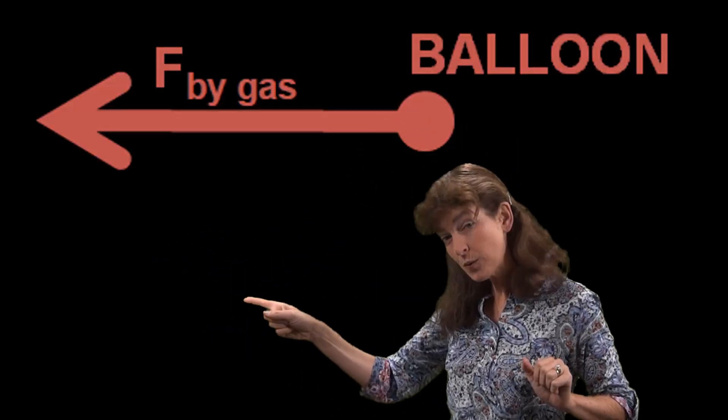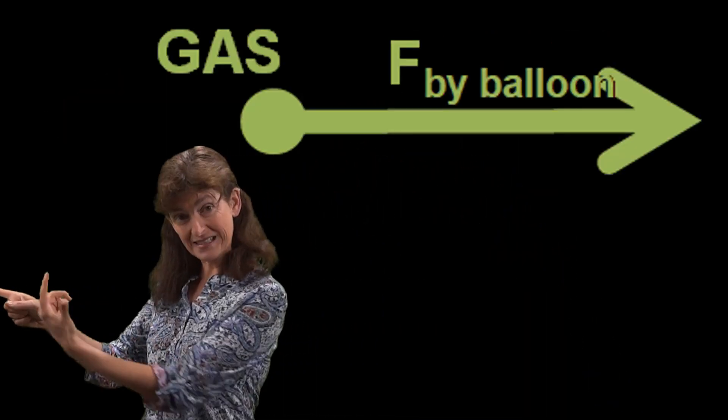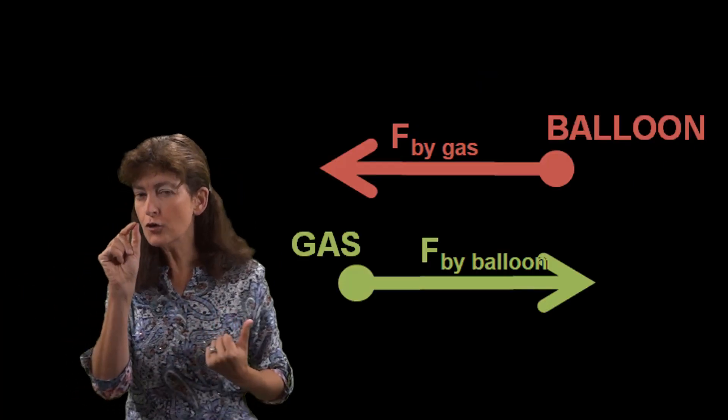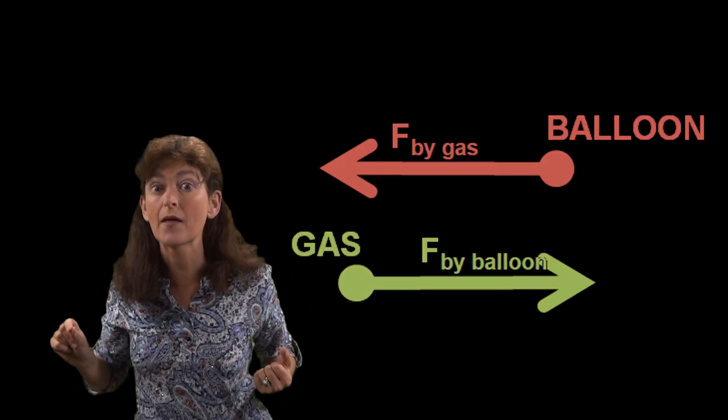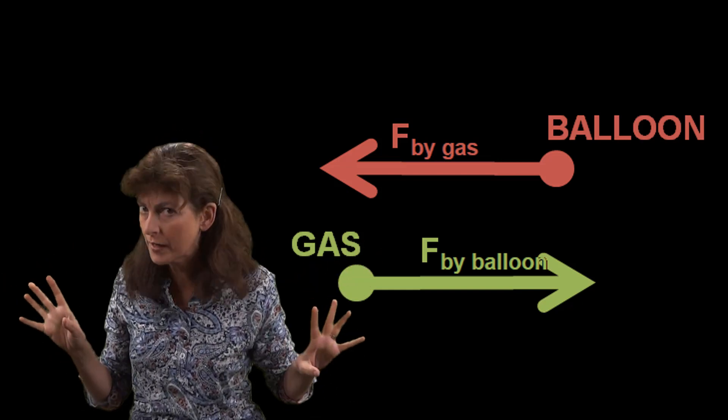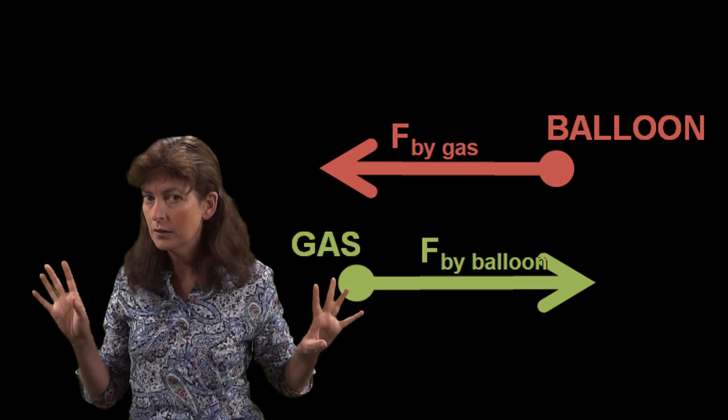Of course it's much more complex when you don't have the guidance system, so that the forces are not in line, but let's keep it simple. The balloon is forced that way, the gas is forced that way. But notice those two forces can't cancel one another out for us to say everything's in equilibrium — why not?